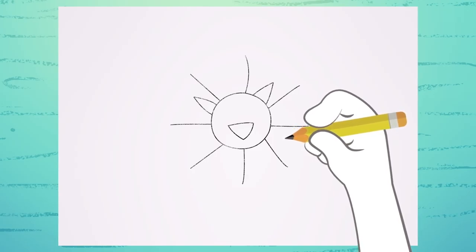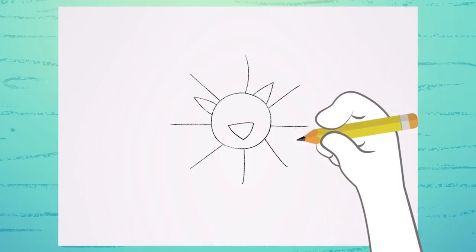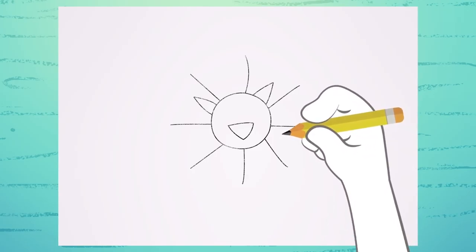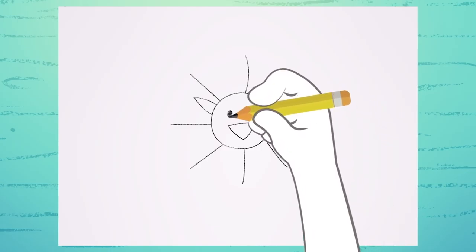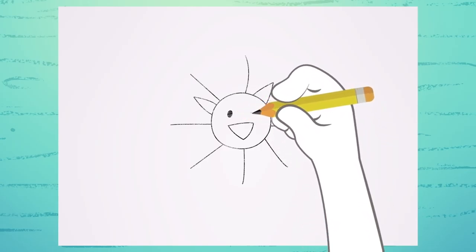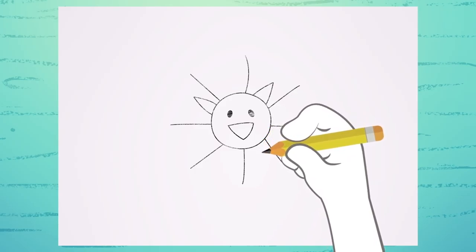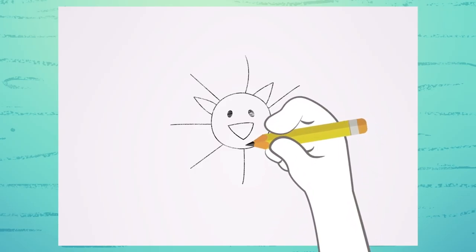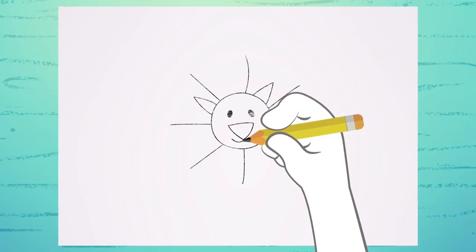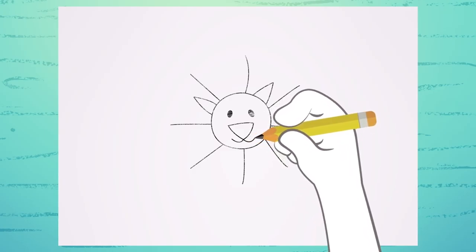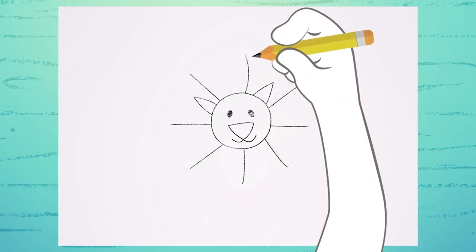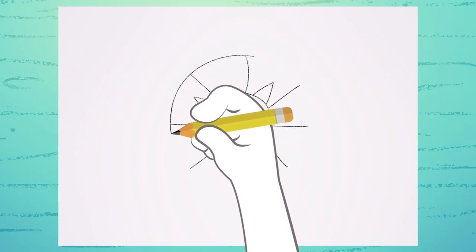The lion is almost ready! The eyes are just two small balls. The mouth is just two curved lines to both sides of the triangle. Connect this dot to this one.